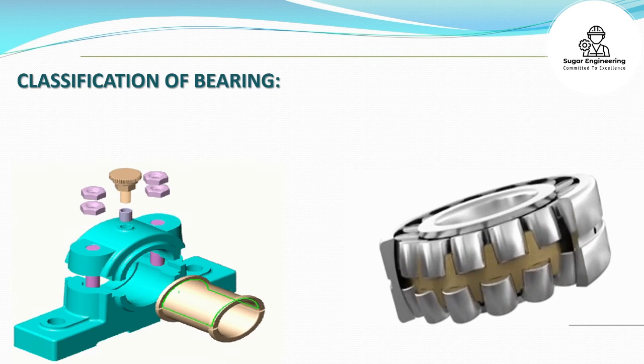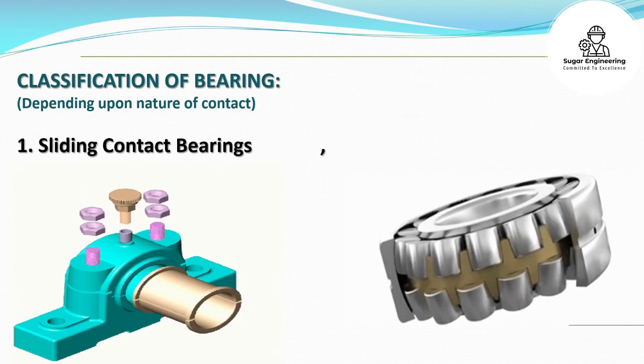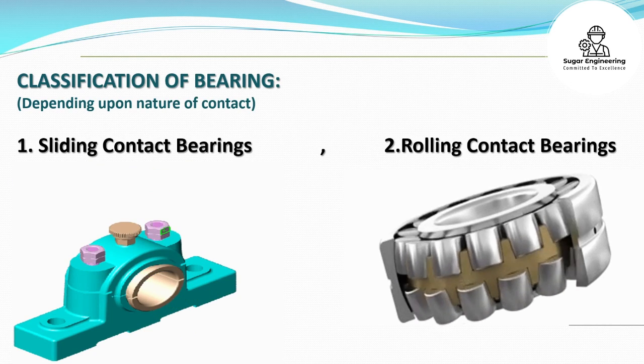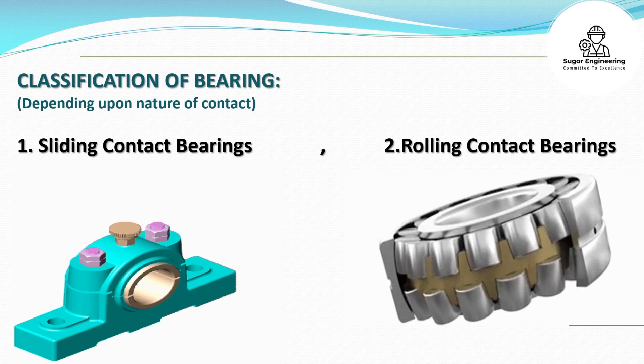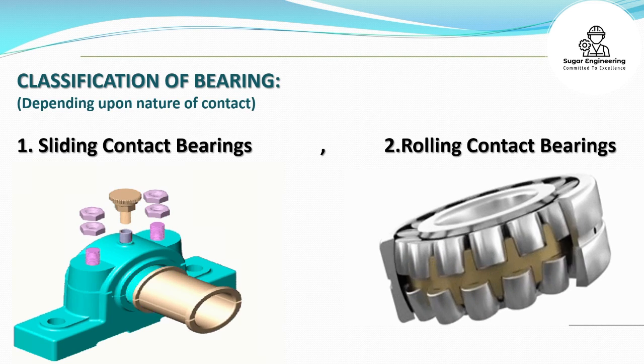Bearings are classified depending upon the nature of contact. There are two types: sliding contact bearings and rolling contact bearings.